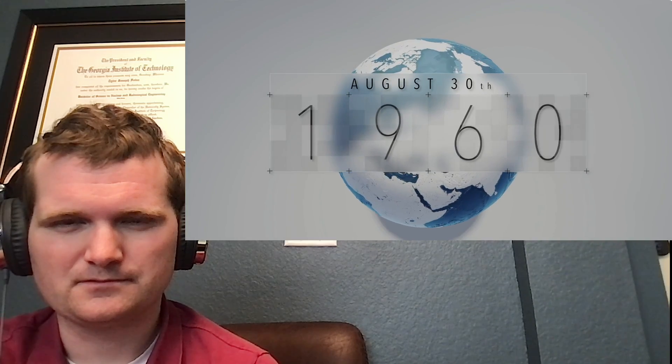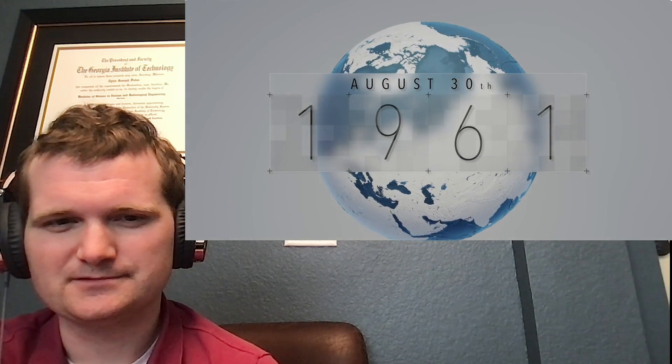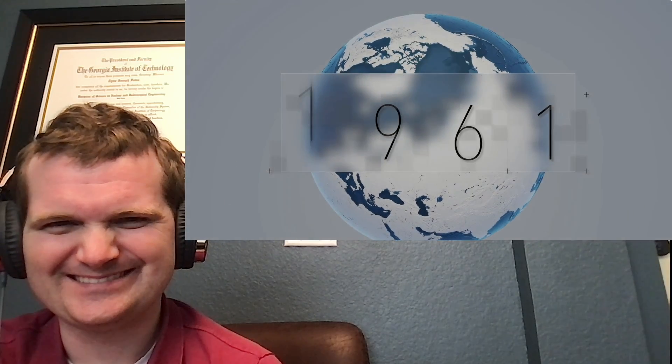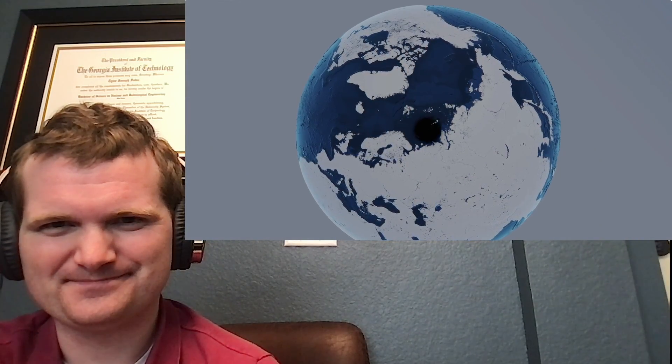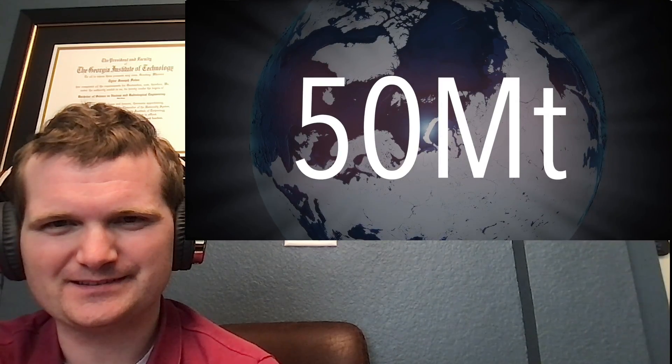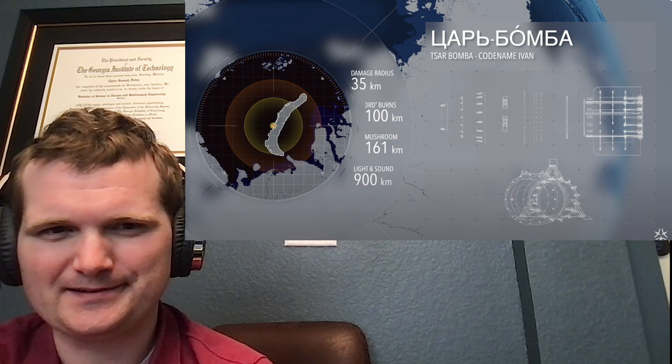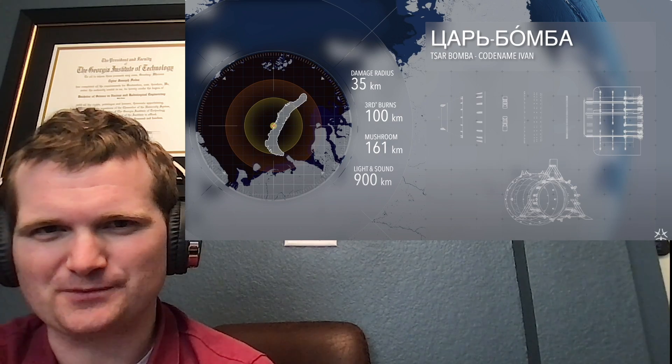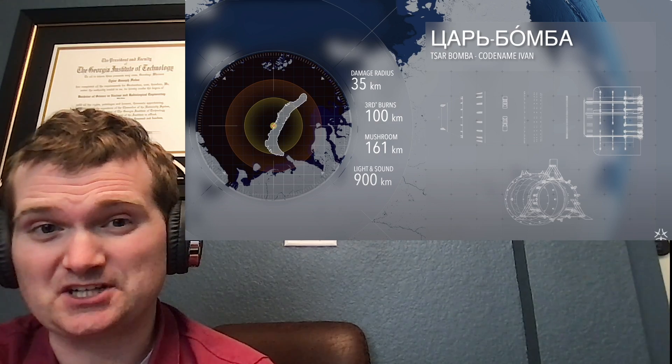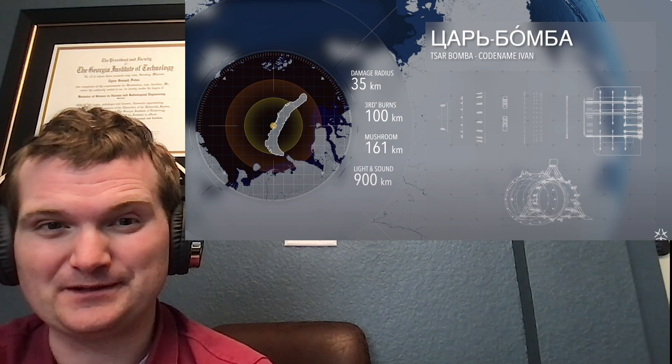On August 30th, 1961, at the Cape of Severny Island, Nova Zembla—I've seen enough videos on this—the Soviet Union tested the most powerful thermonuclear weapon ever created, the Tsar Bomba, codename Ivan. Its powerful blast yielded an unparalleled 50 megatons, enough to annihilate anything in a 35 kilometer radius. The explosion...not annihilate.